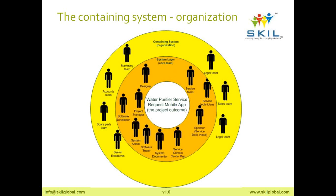These teams — spare parts, accounts, marketing, and legal — are generally missed. Then we have senior executives, also part of your organization, such as the managing director or vice president. They are not directly impacted but are responsible for costs or the product line. So we have identified the core layer — the system layer with direct users — and the next layer, the containing system, which is your own organization. Both layers are within your organization where you have control and your processes can be used.